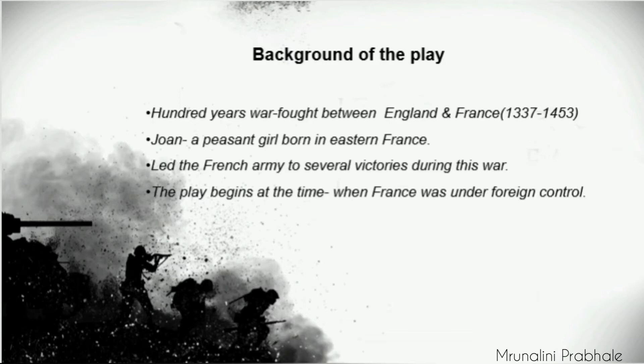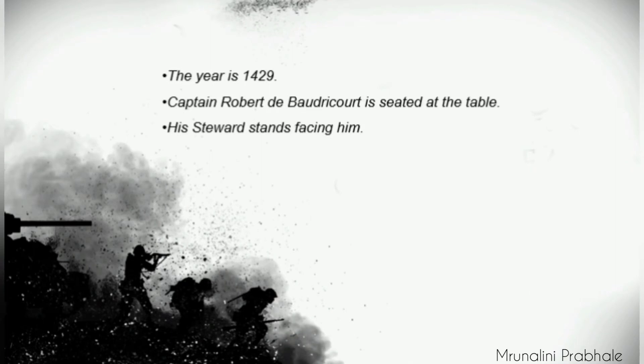In the background of the play there is the Hundred Years' War, fought between England and France. The actual year described through this play is 1429. At the beginning of the scene, Captain Robert, who is a military officer, is seated at the table and his steward stands facing him. Now we come to the next topic - the characters.